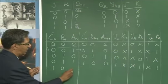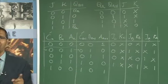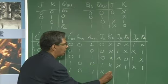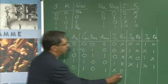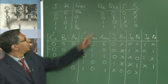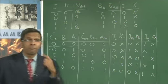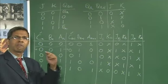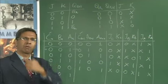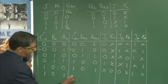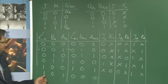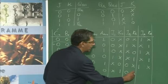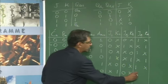From state 4 (100) to state 5 (101): C goes from 1 to 1, so JC=X, KC=0. B stays 0 to 0, so JB=0, KB=X. A goes from 0 to 1, so JA=1, KA=X. Finally, from state 5 (101) back to state 0 (000) — because it is a mod-6 counter with values 0 to 5, after 5 it must go back to 0. For C: 1 to 0 gives JC=X, KC=1. For B: 0 to 0 gives JB=0, KB=X. For A: 1 to 0 gives JA=X, KA=1.